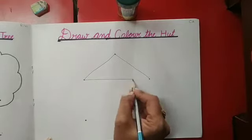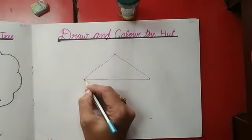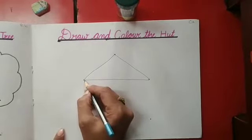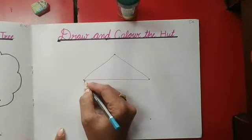And make triangle. Aur hum kya banayengi? Ek triangle banayengi. Now, we will draw one standing line. Ab hum kya karengi? Hama hi straight line draw karengi.